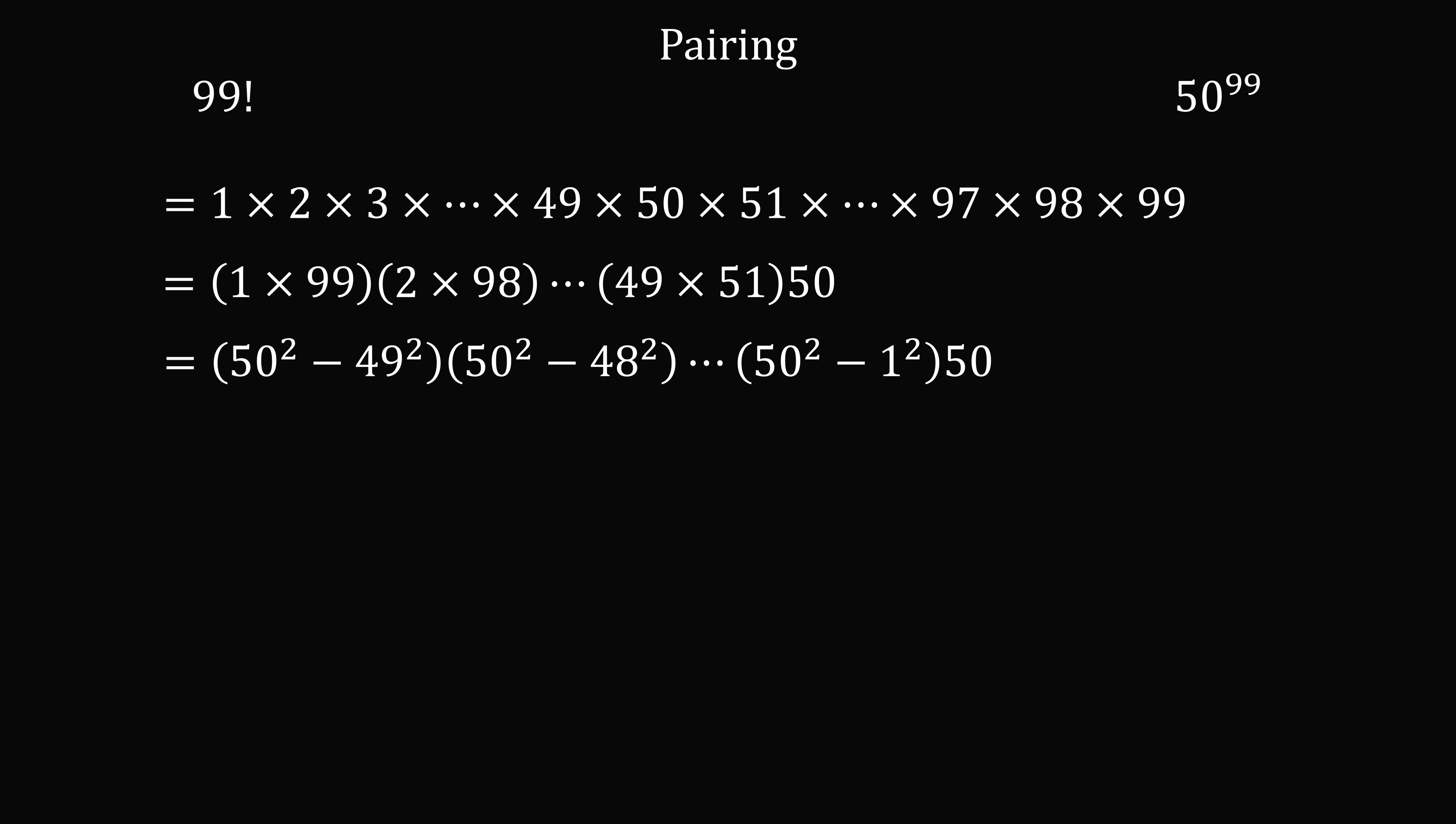Notice that each of these is going to be less than 50 squared, because we have 50 squared minus some other square. So we have 49 terms that are less than 50 squared, and then we multiply this by 50.